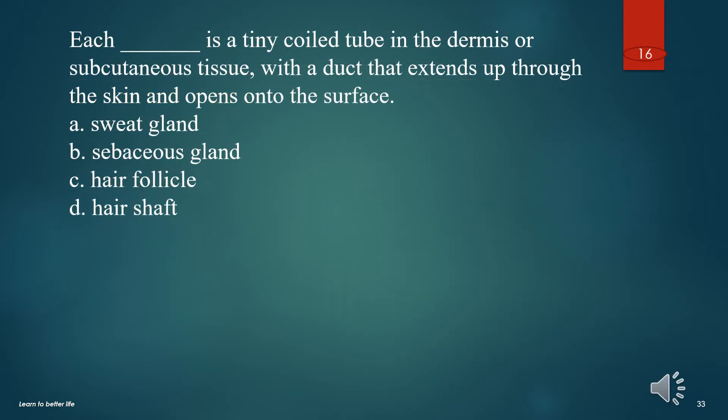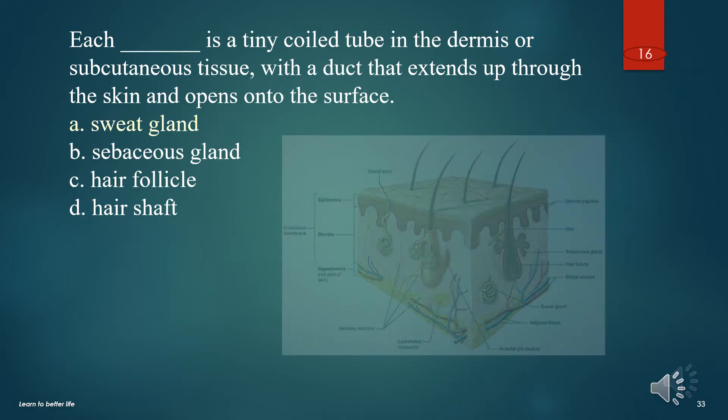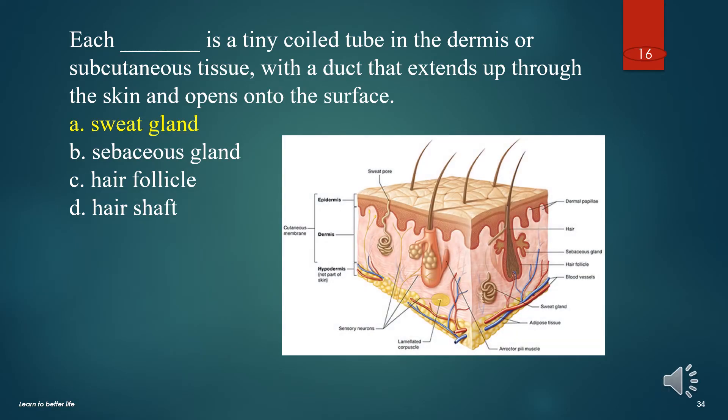Each what is a tiny coiled tube in the dermis or subcutaneous tissue, with a duct that extends up through the skin and opens onto the surface? A. Sweat gland. B. Sebaceous gland. C. Hair follicle. D. Hair shaft. The answer is A. Sweat gland.